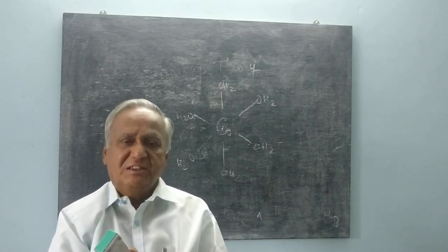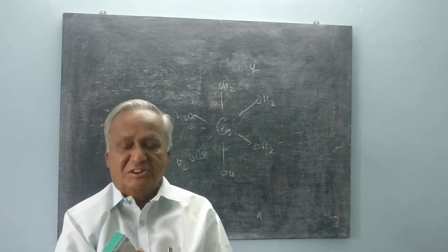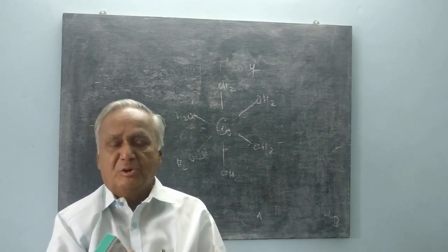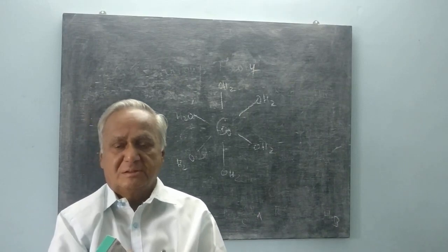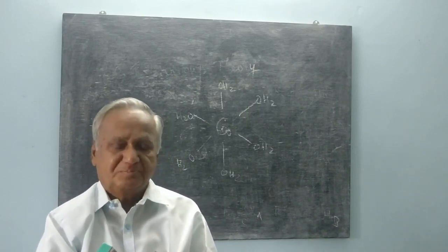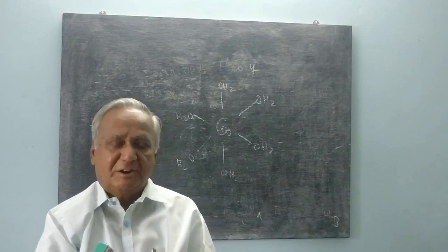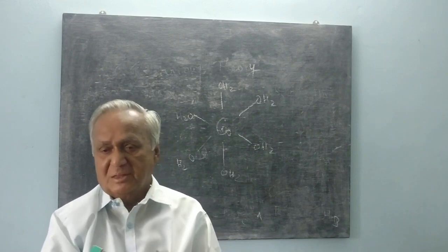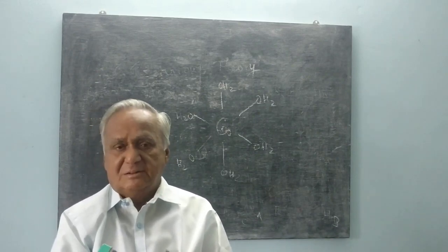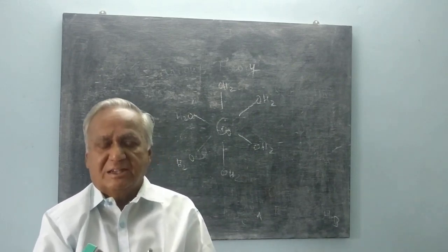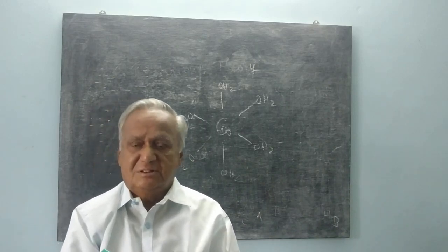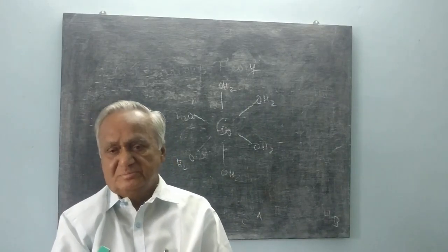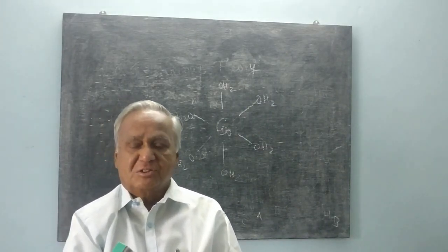Based on the symmetry elements and symmetry operations, molecules have been classified into what are called point groups. Before going into those details and predicting the conditions for spectroscopy, let me introduce what is called the character table. Every point group has a character table that summarizes the symmetry.